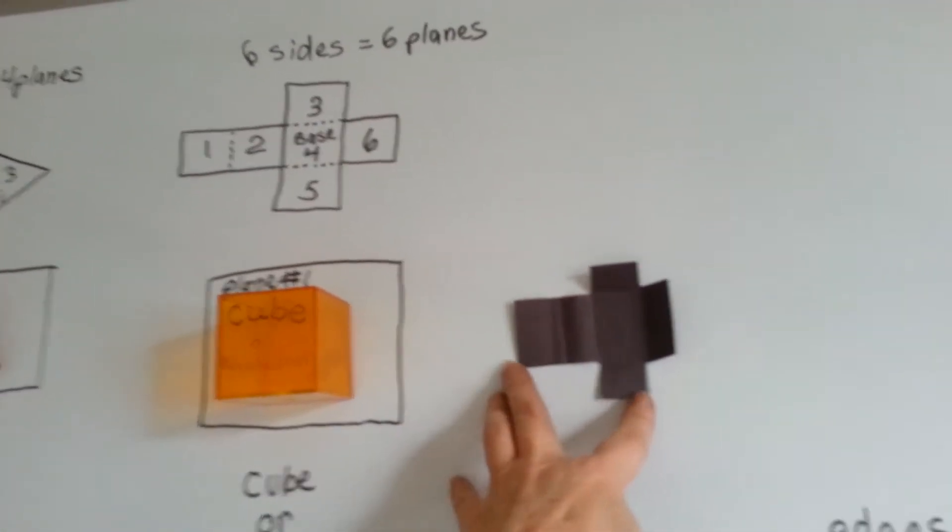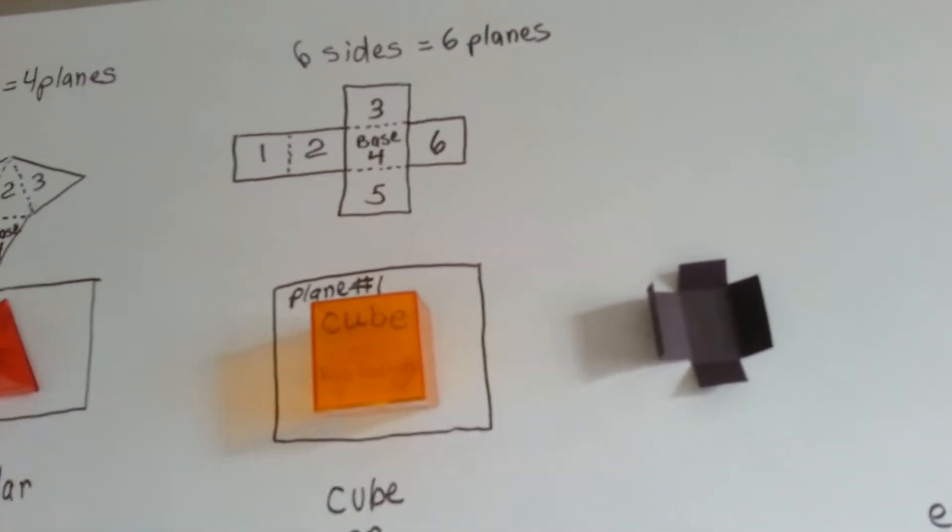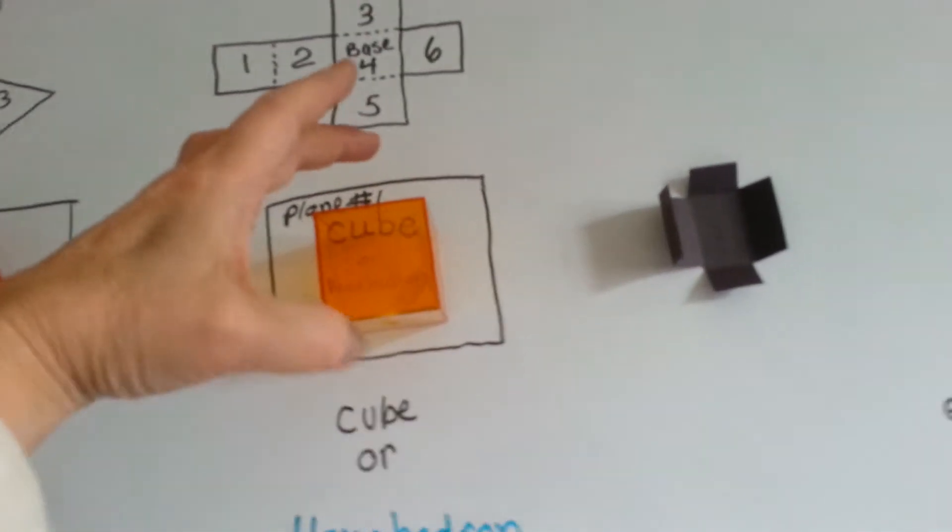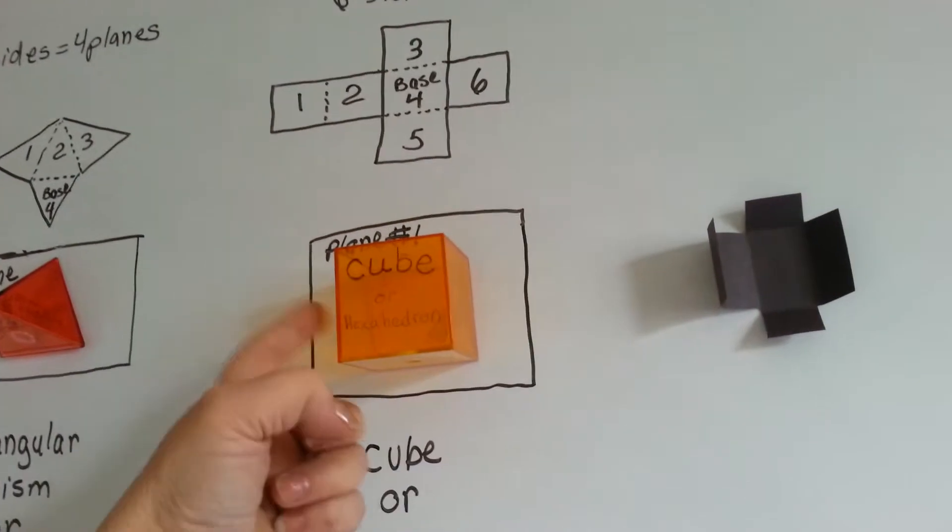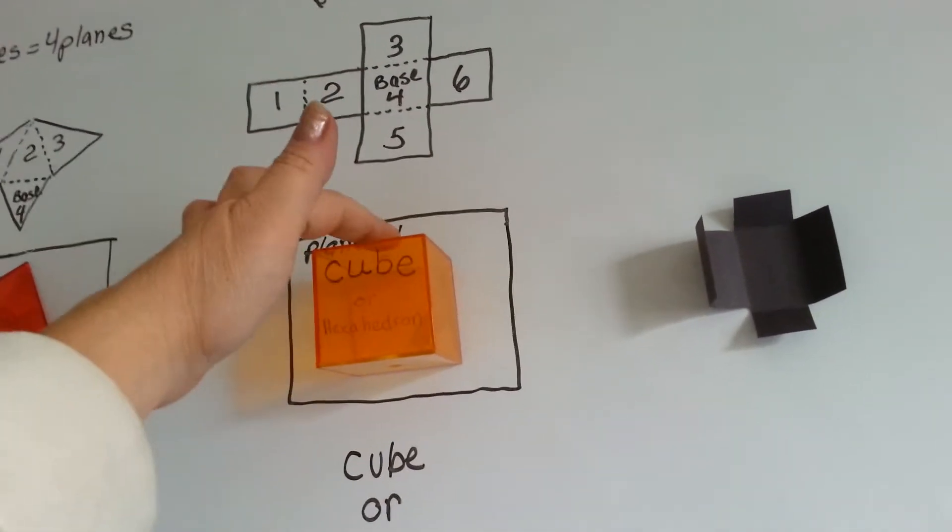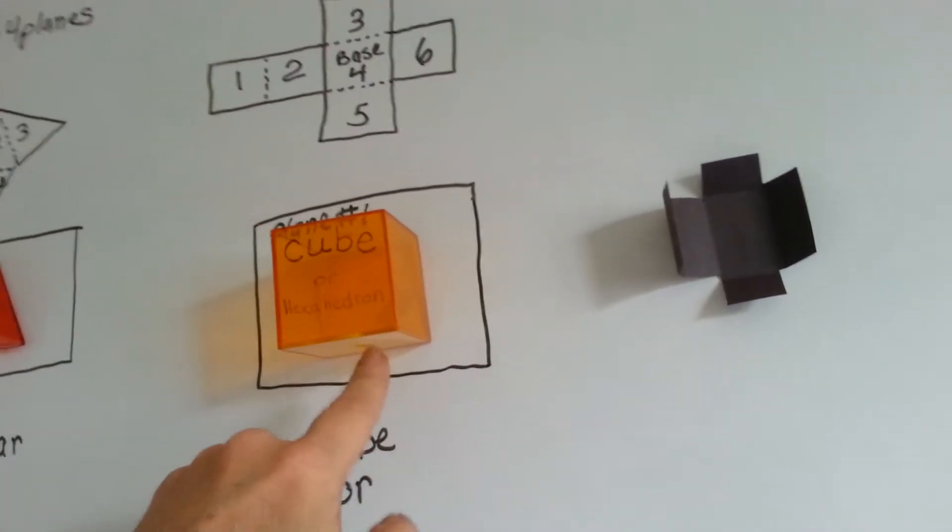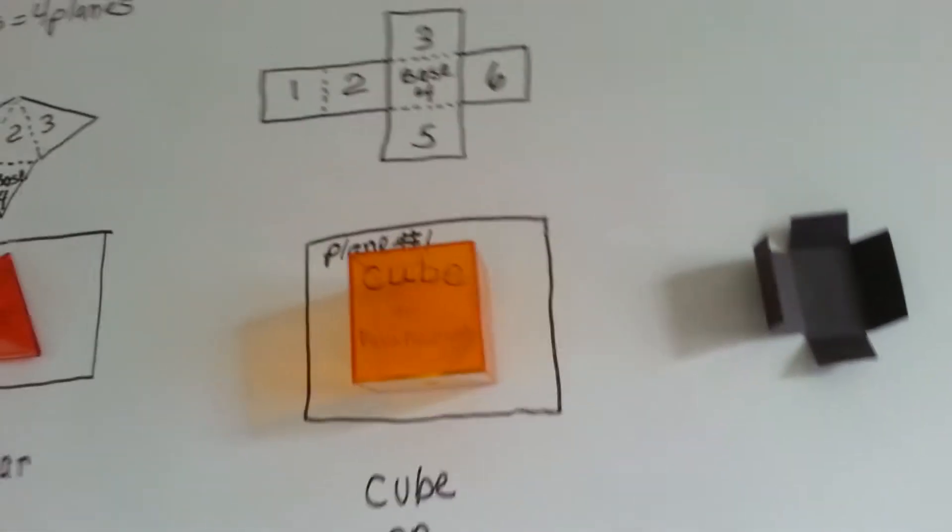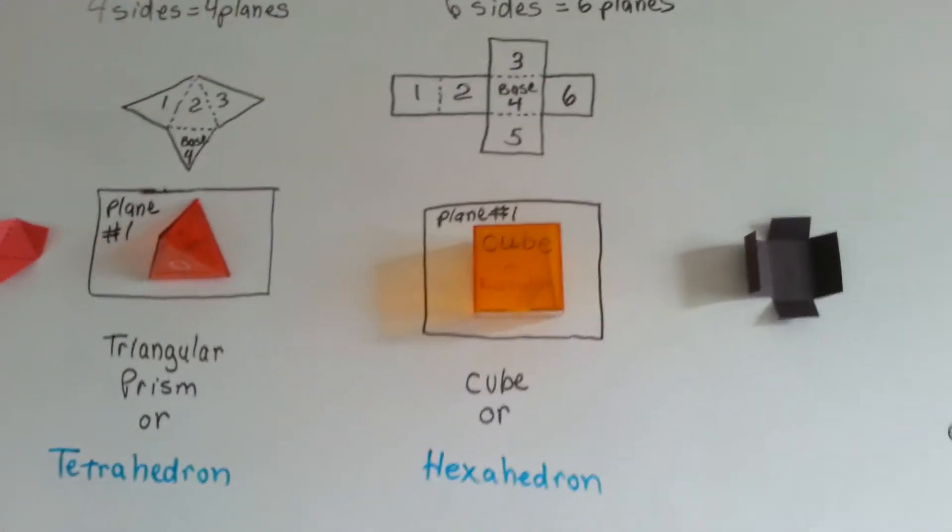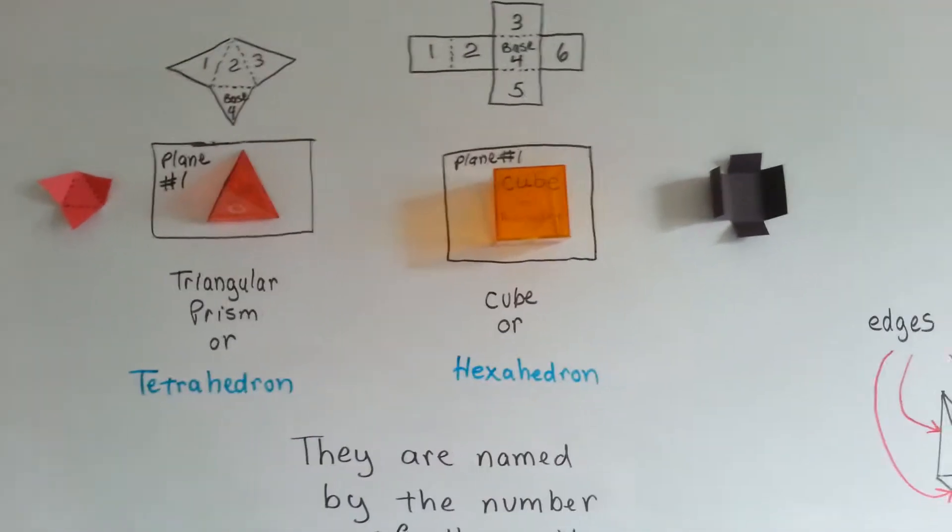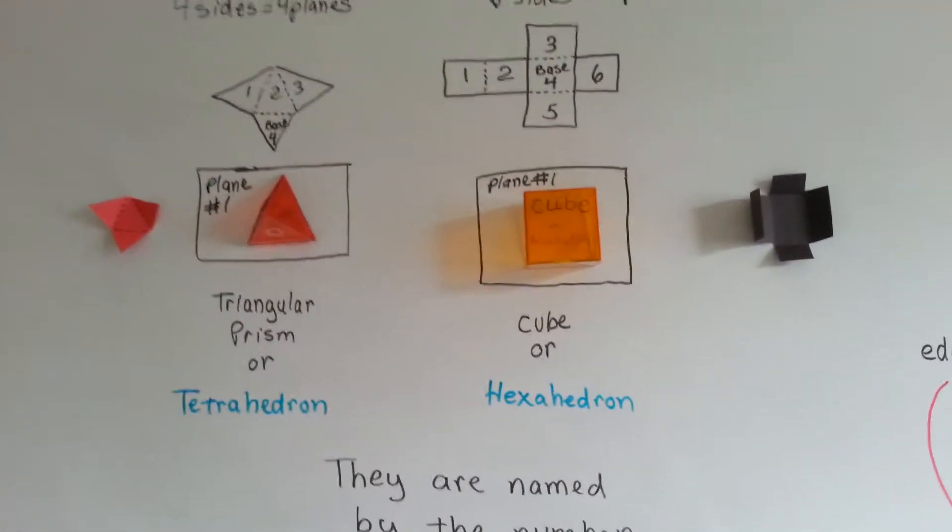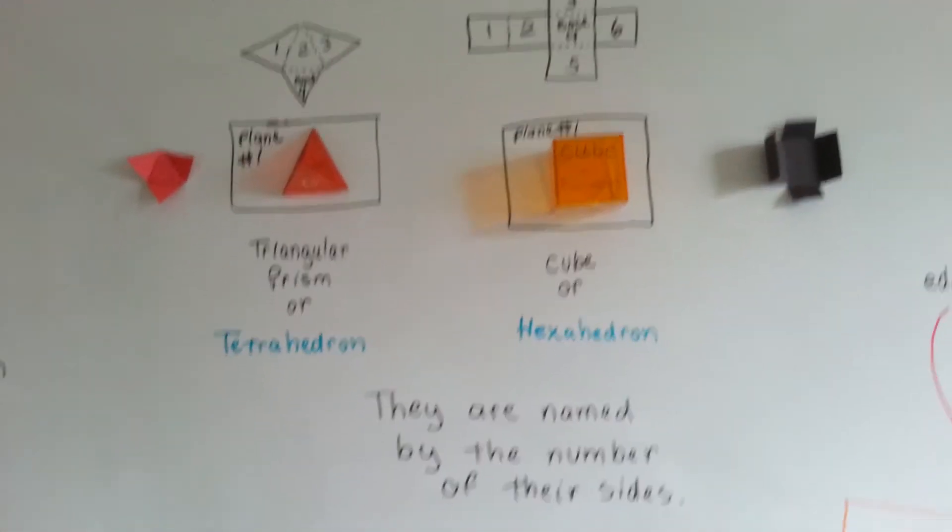So, these are all our different planes. We've got six different planes that this cube is on. We've got one, two, three, the part that's on the board is four, five, down here, and that's six. So, you can see them all when it's opened up. That is basically a cube, but it's a hexahedron. And it's named because of how many sides it's got. They're named by the number of their sides.